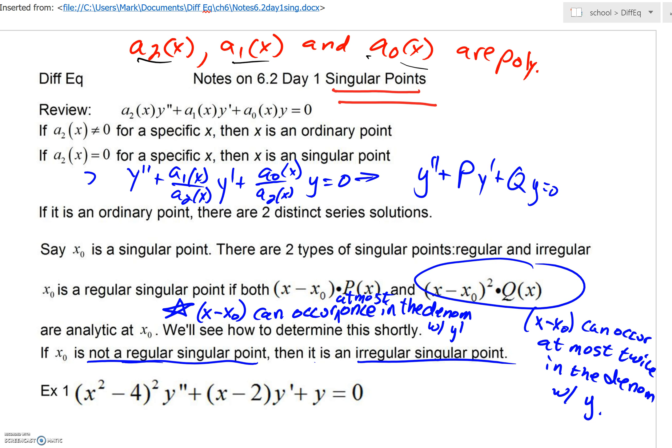However, if your leading coefficient is equal to 0 for that specific x value, then that specific x value will be known as a singular point. And you can see what would happen. We could divide by a₂. So say divide by a₂(x). And of course, we'd have a much simpler looking function. But you could see now that we'd have two fractions here where it's possible to get those denominators to equal 0. We could call the coefficient now in front of y prime a₁ over a₂. We could call that p. And a₀ over a₂, we could call that q.